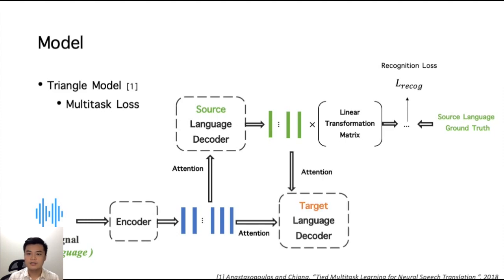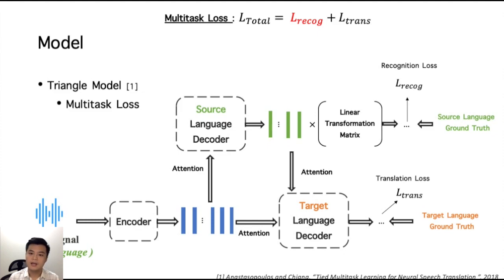And the target language decoder will attend on the hidden states for final translation decoding. The translation loss can also be computed. Finally, the objective function is the summation of the recognition and translation loss, and we name it as the multi-task loss.